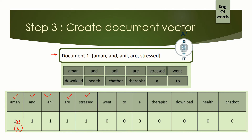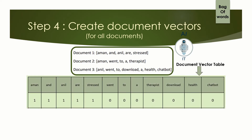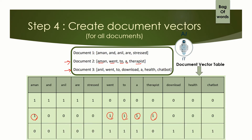The same thing has to be repeated for the rest of the documents, which is step 4. In step 4, we take all the documents and create the document vector table for all three documents. We completed the first document in step 3. For step 4, we do it for the second document: one for Aman, one for went, one for to, one for a, one for therapist — marking a one for each word occurring in the second document. Then we insert one more row for the last document, Anil went to download a health chatbot, and mark the values.